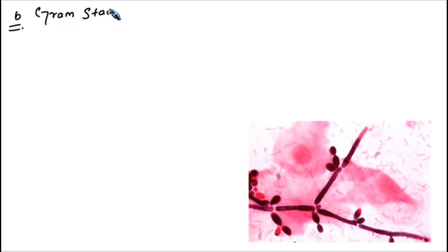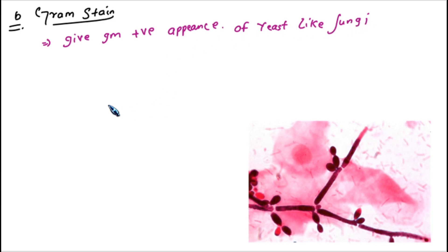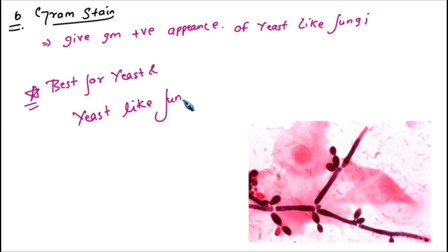The second staining technique is Gram staining. Fungi show positive Gram staining findings — positive staining of budding yeast-like cells. Gram staining is best for yeast and yeast-like fungi. You can see in the diagram the Gram-stained fungi appearing purple.